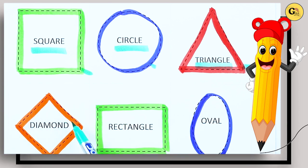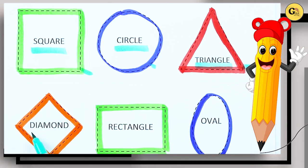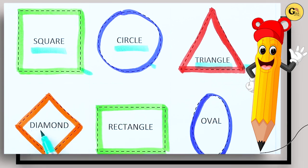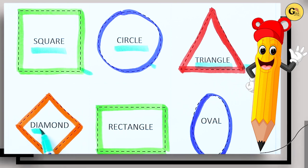Which shape is this? Diamond. D-I-A-M-O-N-D. It's a diamond with orange color.